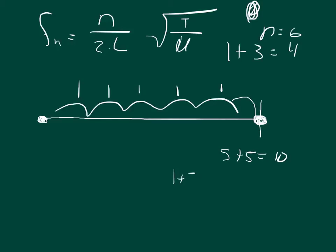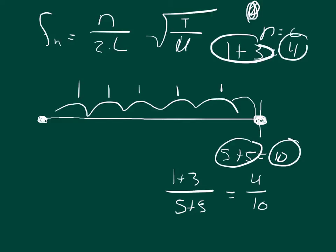I can take this 1 plus 3, I can divide it by the 5 plus 5, and it should equal this 4 divided by this 10. And so this side of the equation over this side of the equation equals this side over this side.